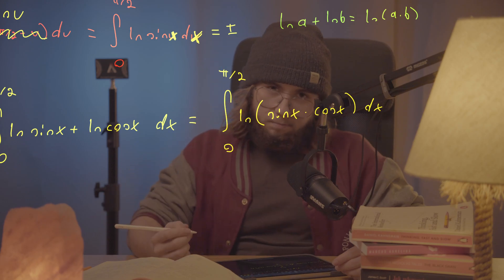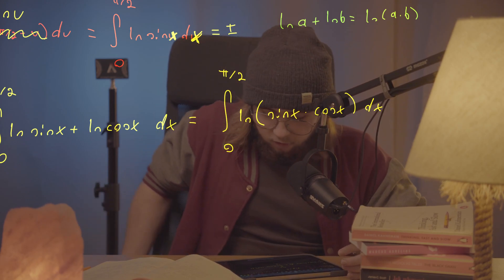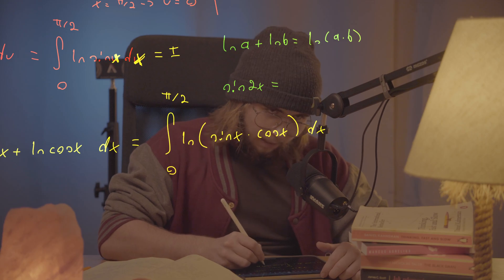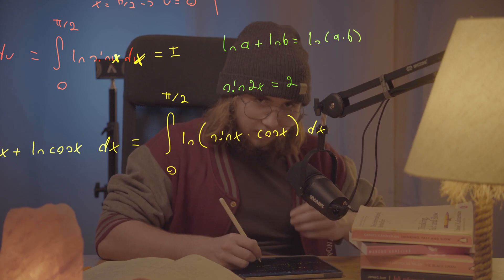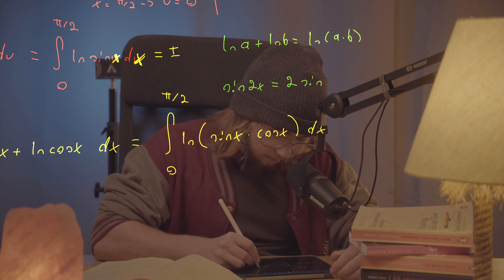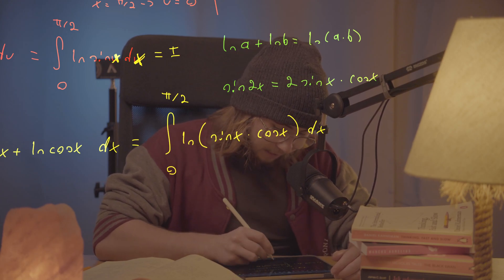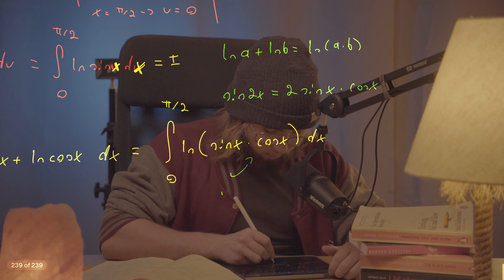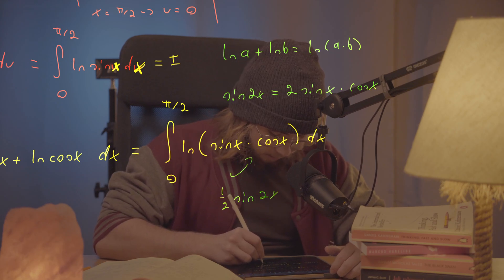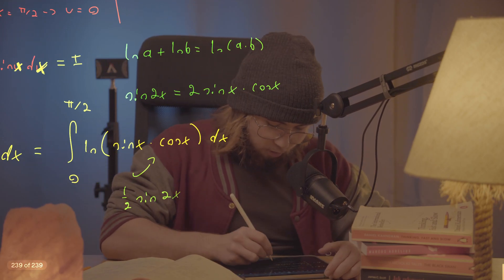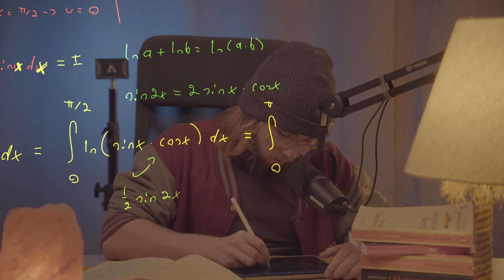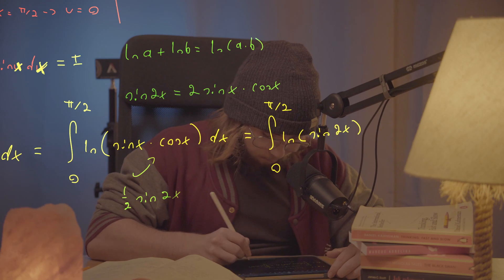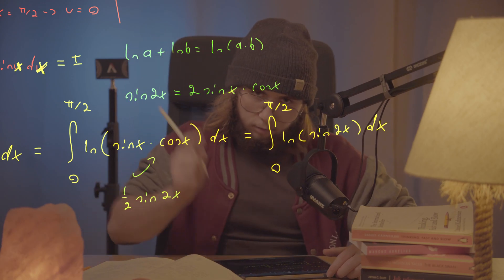So what I'm going to get after doing that is the integral from 0 to π/2 of the natural log of sine of x multiplied by cosine of x, dx. And now I'd like to use another trig identity — the double angle formula — which tells us that sine of 2x equals 2 sin x cos x. We've got sine x times cosine x here, so we just multiply by a half, getting the integral from 0 to π/2 of the natural log of (1/2) sine of 2x, dx.